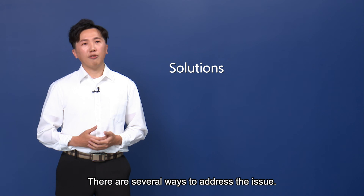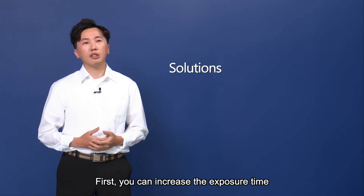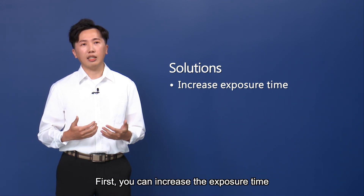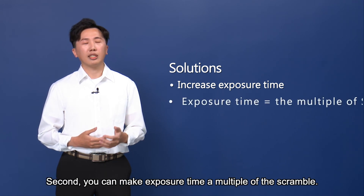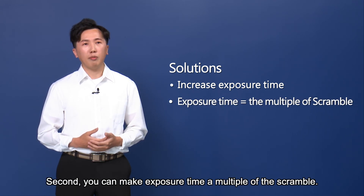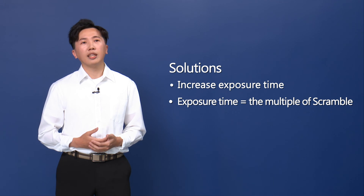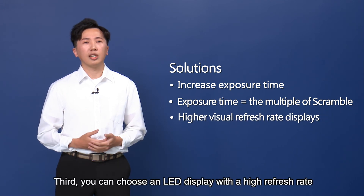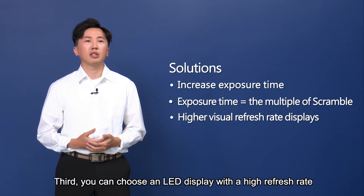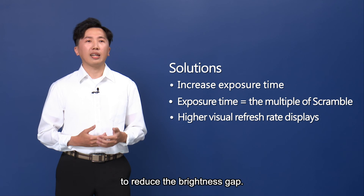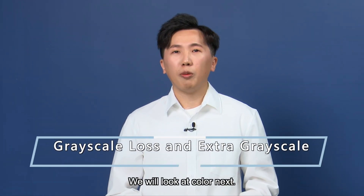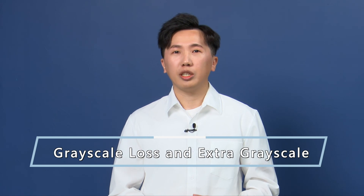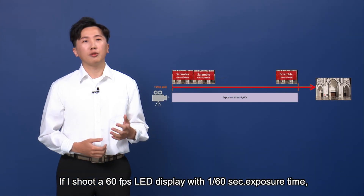There are several ways to address the issue. First, you can increase the exposure time so you won't see the bright and dark lines. Second, you can make the exposure time a multiple of the scramble. Third, you can choose an LED display with a high refresh rate to reduce the brightness gap.